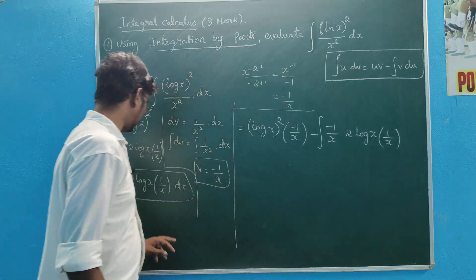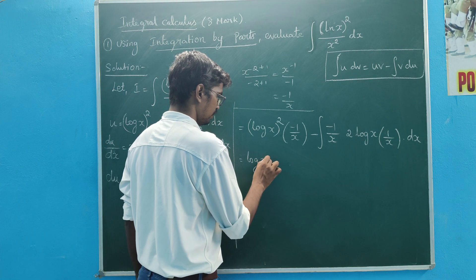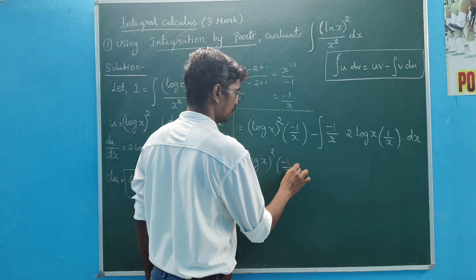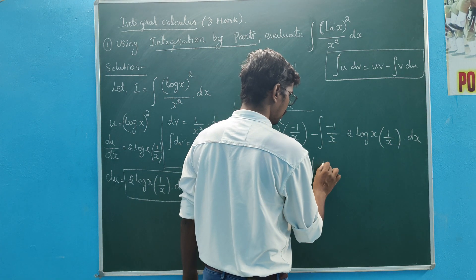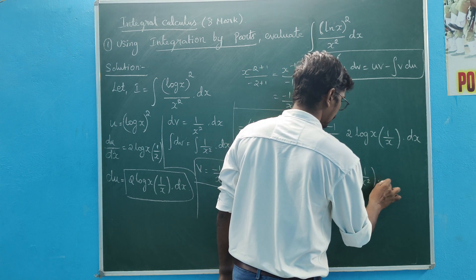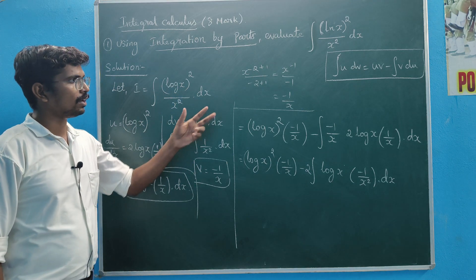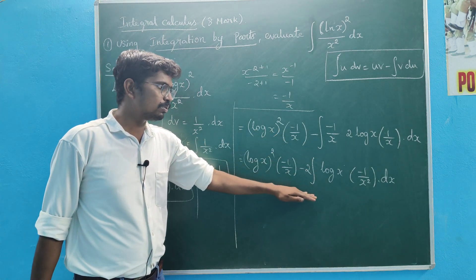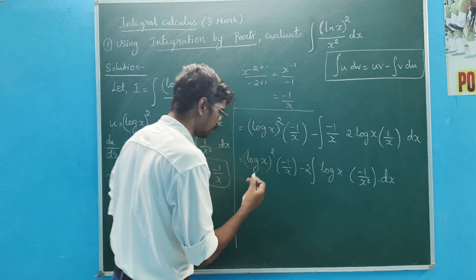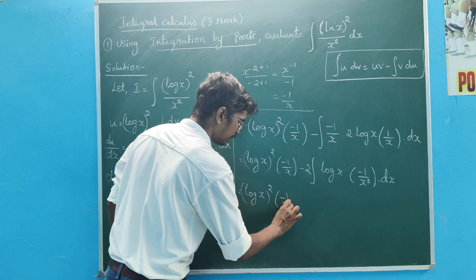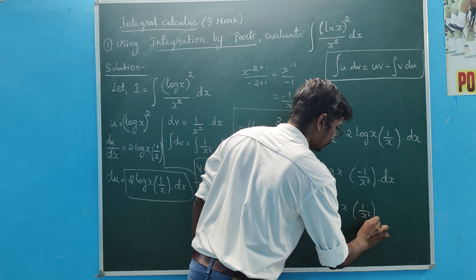v is 1 by x. 2 into log x into 1 by x into dx. Log x whole square, minus 1 by x, minus integral of log x minus 1 by x squared into dx. This is the first step — we will simplify this step. Log x whole square into minus 1 by x plus 2, integral of log x into 1 by x square into dx.